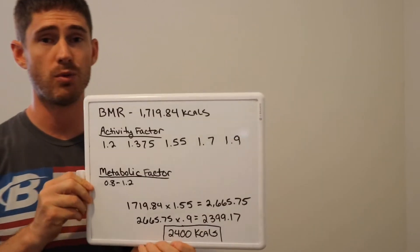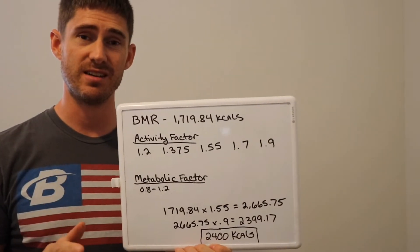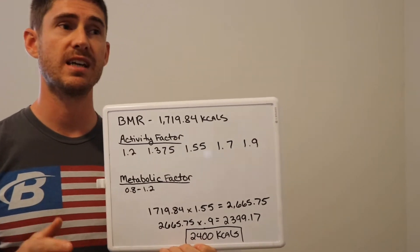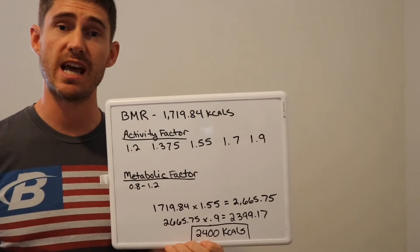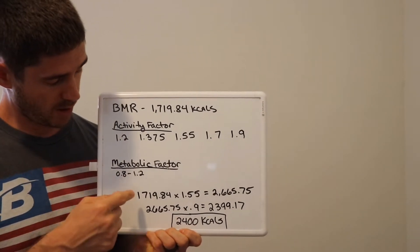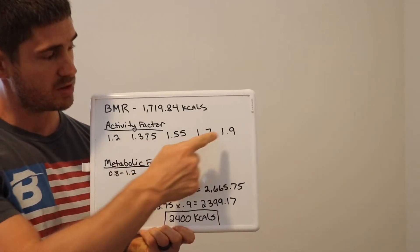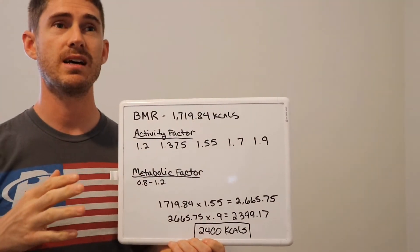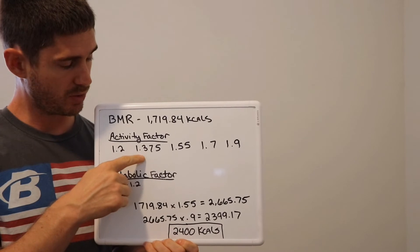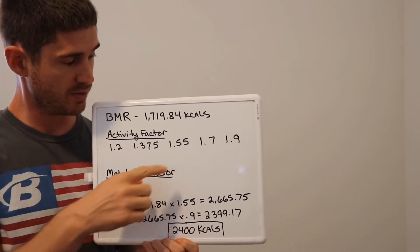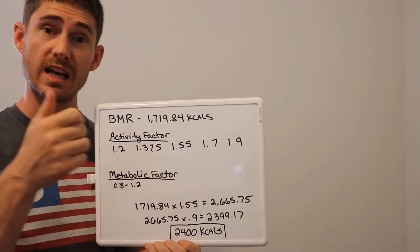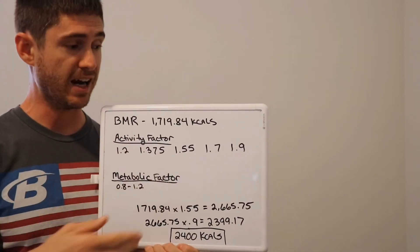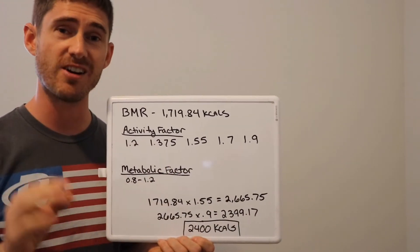Now we're going to talk about activity factors. Activity factors are basically how active you are during the day, and there's a range from 1.2 to 1.9. 1.2 would be not very active. 1.375 is moderately active. 1.55 is starting to get up a little bit more above moderate. 1.7 is fairly active and 1.9 is very active.